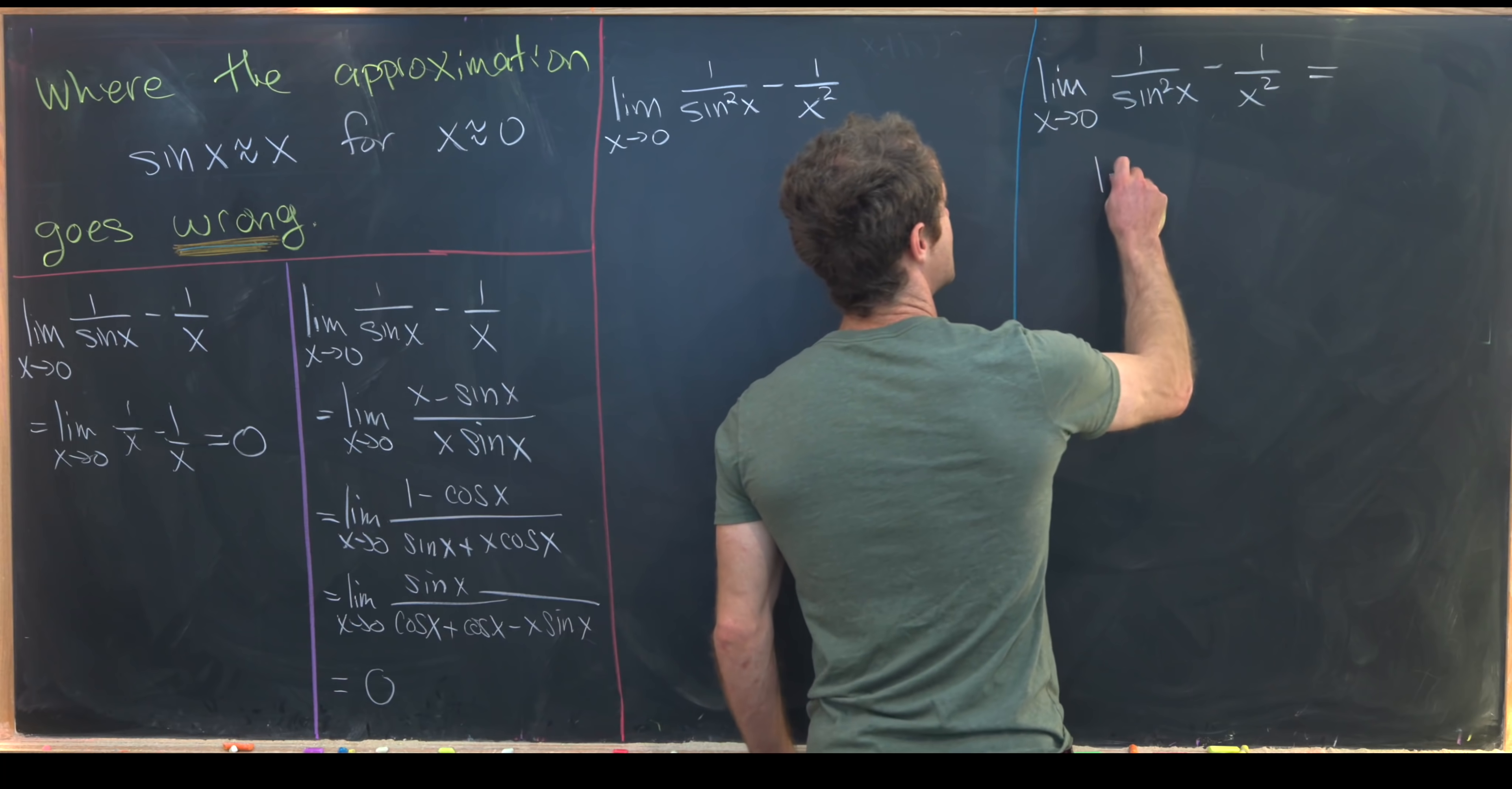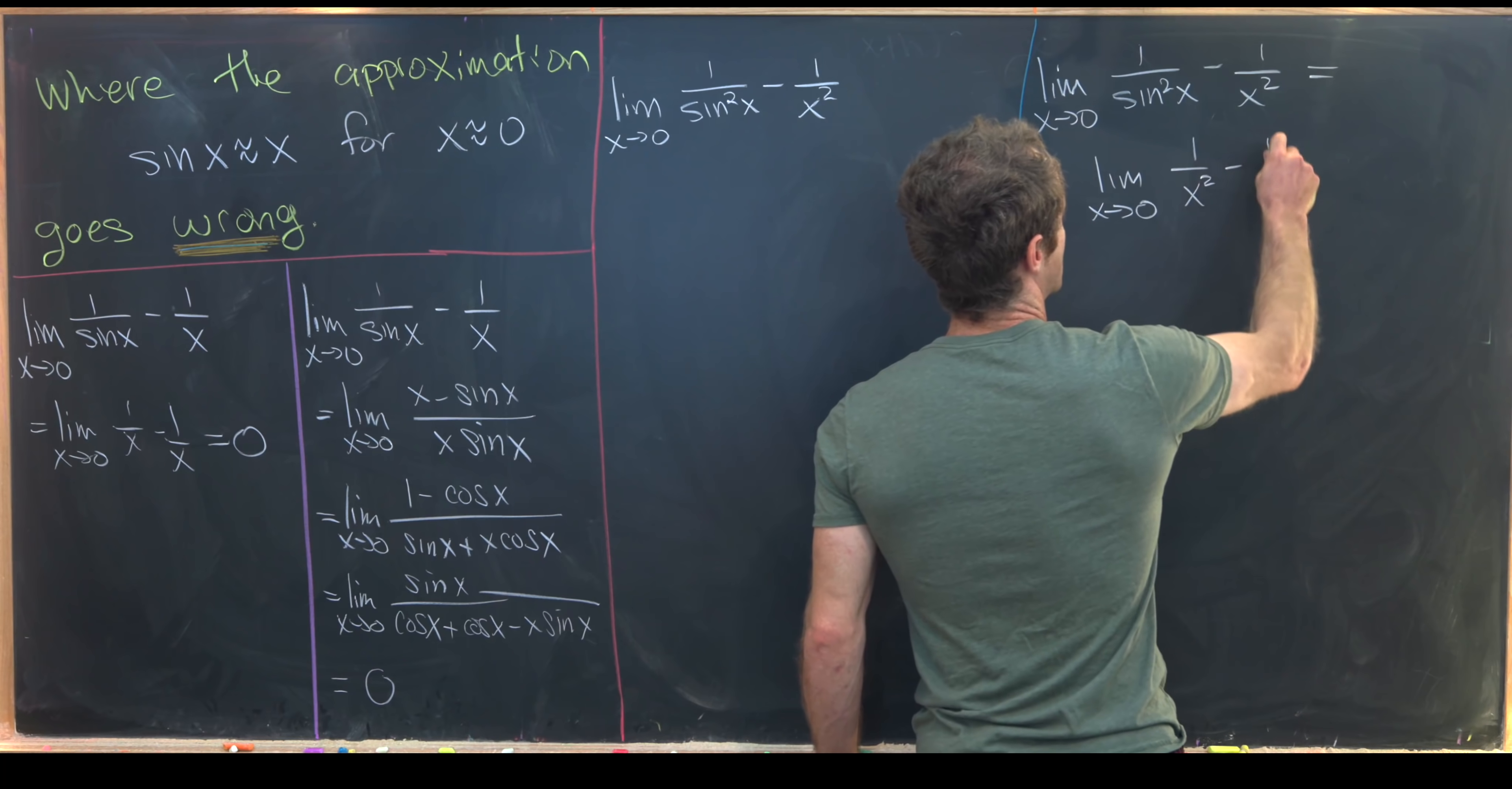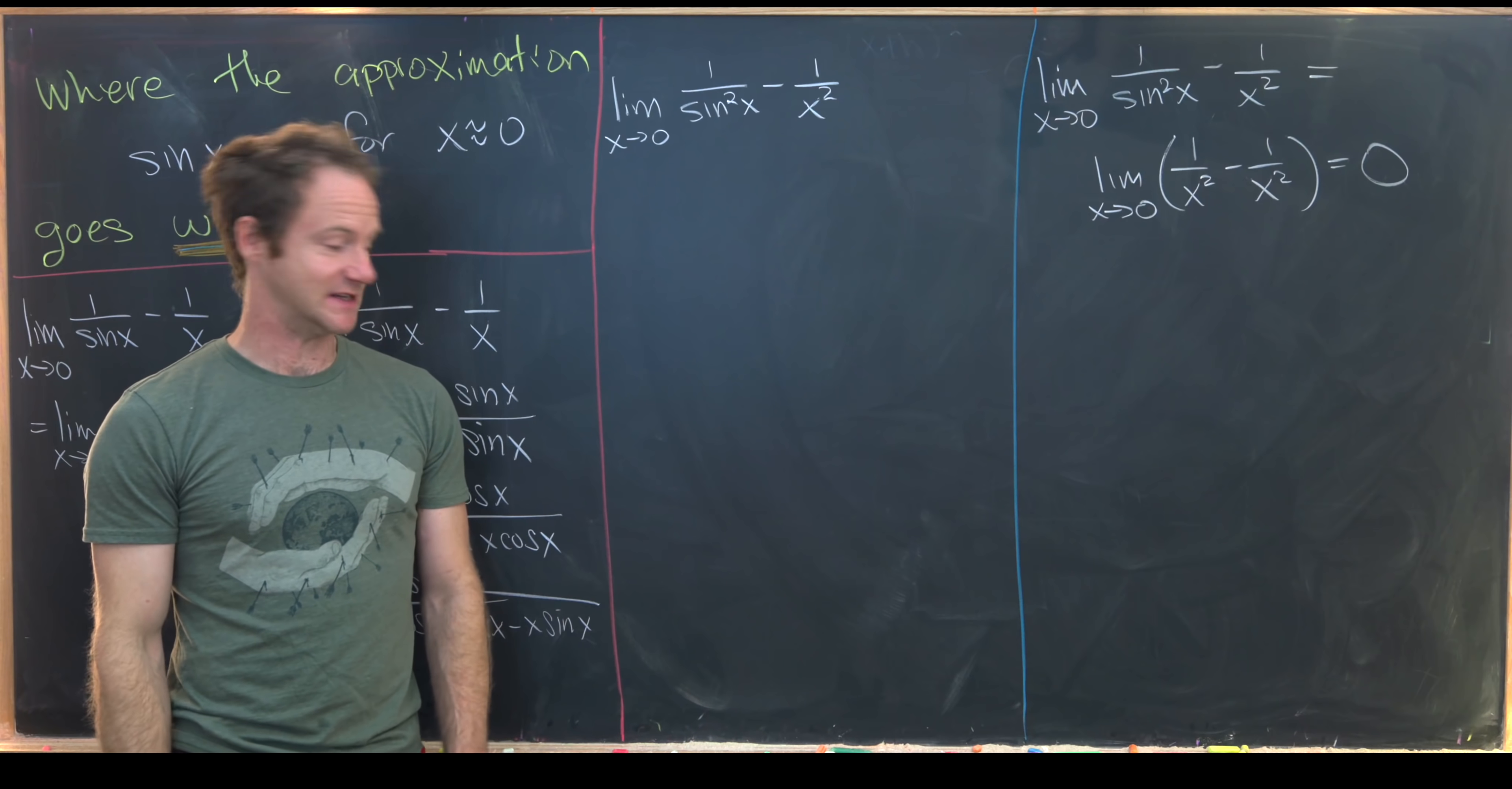then we can just replace this guy with one over x squared. So I've got one over x squared minus one over x squared. That's clearly identically equal to zero. So when we take the limit, we get zero.